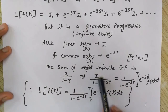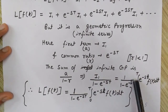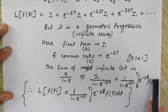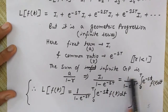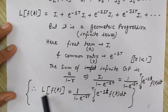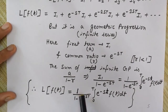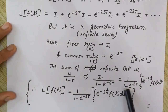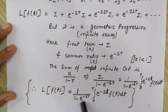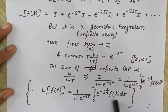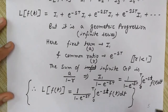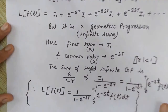Substituting back, I1 is the integral from 0 to T of e to the power minus st times f(t) dt. So the final result is: the Laplace transform of f(t) equals 1 divided by (1 minus e to the power minus sT), times the integral from 0 to T of e to the power minus st times f(t) dt. Hence it has been proved.